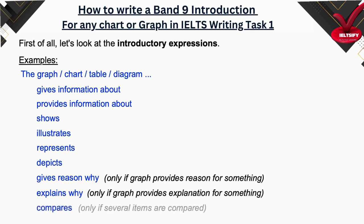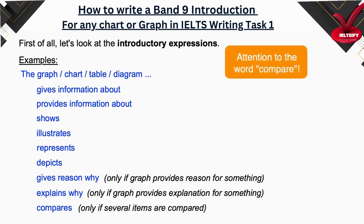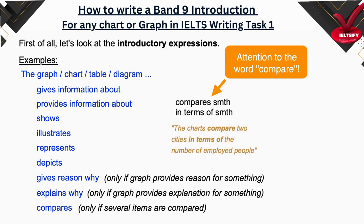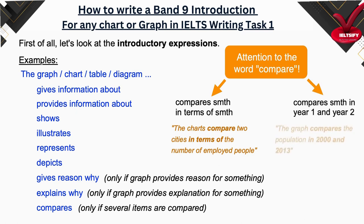'Compares' — only if several items are compared. Pay attention to the word 'compare.' You can say 'compares something in terms of something.' For example: 'The charts compare two cities in terms of the number of employed people.' Or you can say 'compares something in year one and year two.' For example: 'The graph compares the population in 2000 and 2013.'